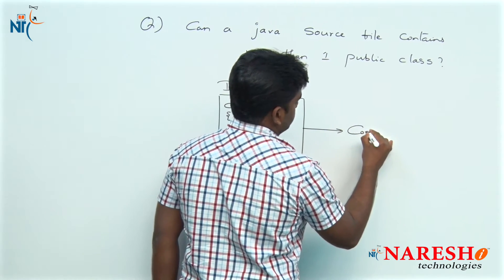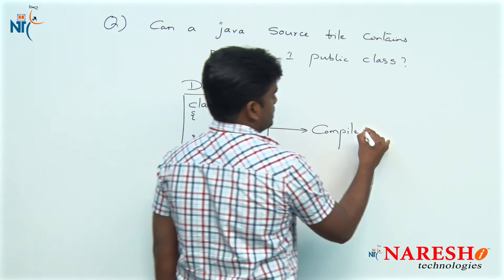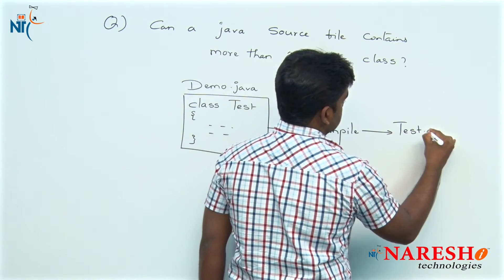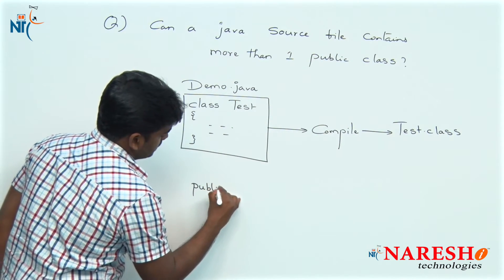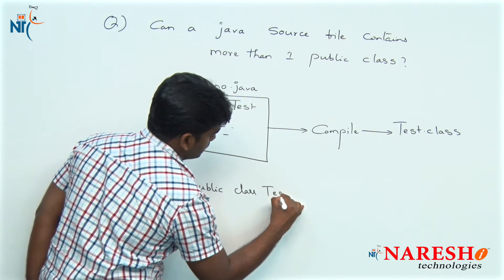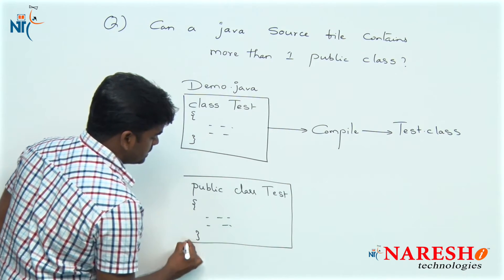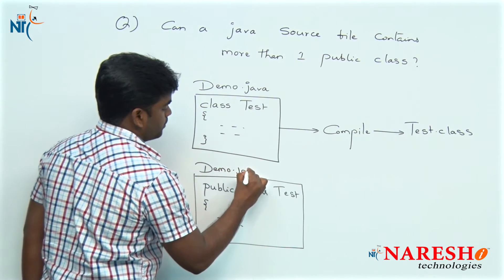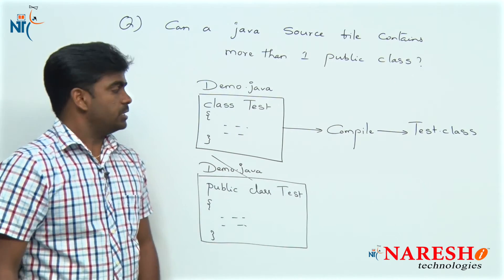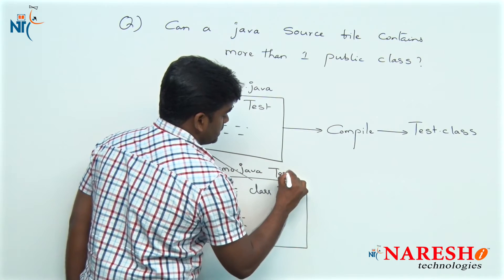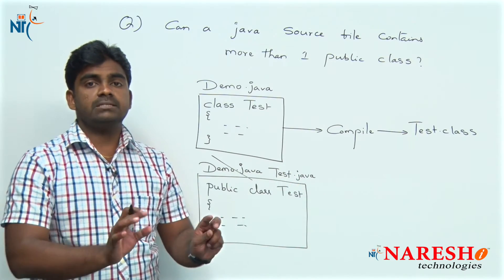Whenever you compile this, the compiler generates test.class. But suppose the test class is public — if the test class is public, you cannot save it with the name demo.java. That would be a strict error. It will give an error message; you have to save it with the name test.java only — the file name and class name should be the same.